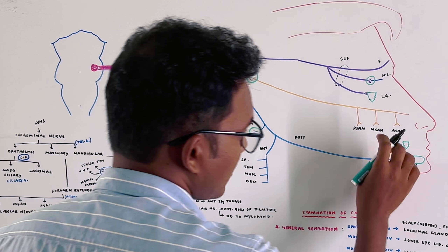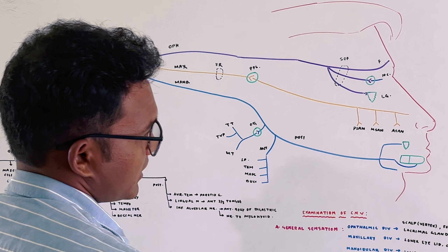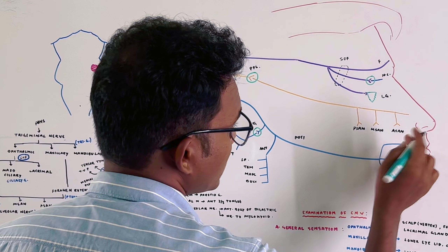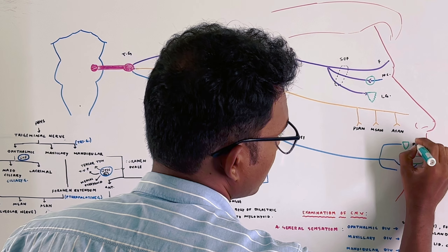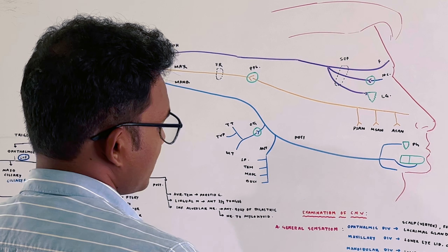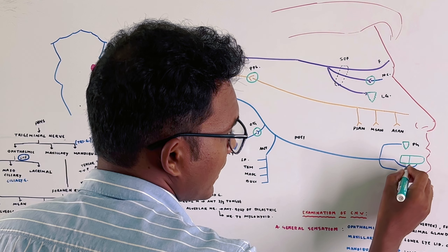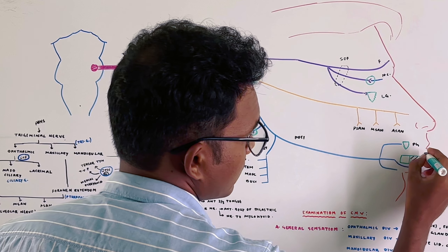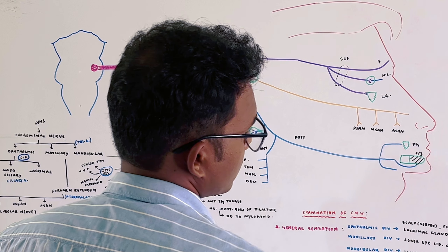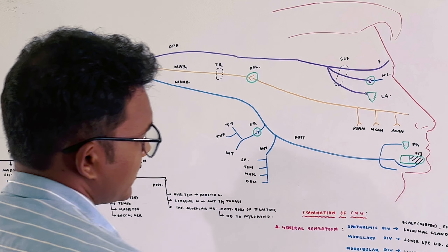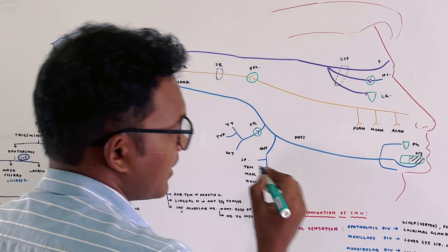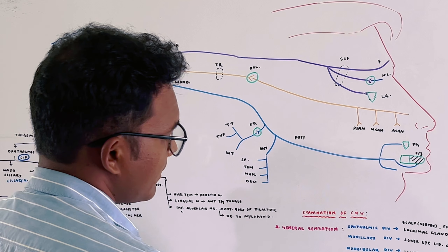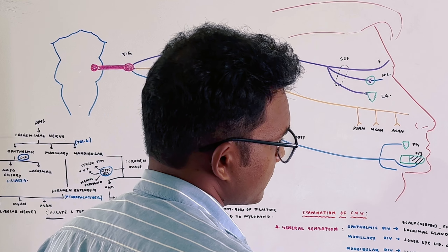The posterior division has three branches. The first branch is the auriculotemporal nerve, which gives a branch to the parotid gland. The second branch is the lingual nerve, which supplies the anterior two-thirds of the tongue. The third branch gives branches to the anterior belly of the digastric muscle and the nerve to mylohyoid.